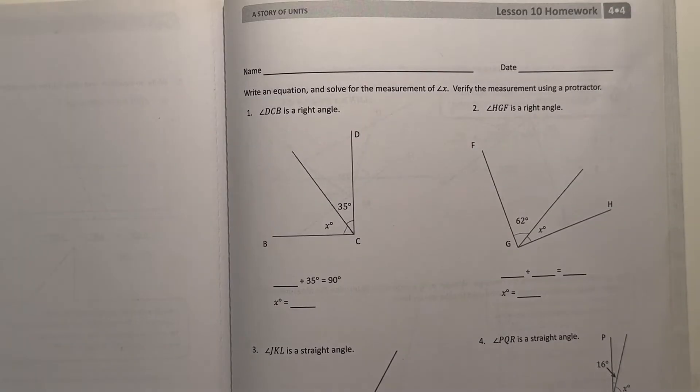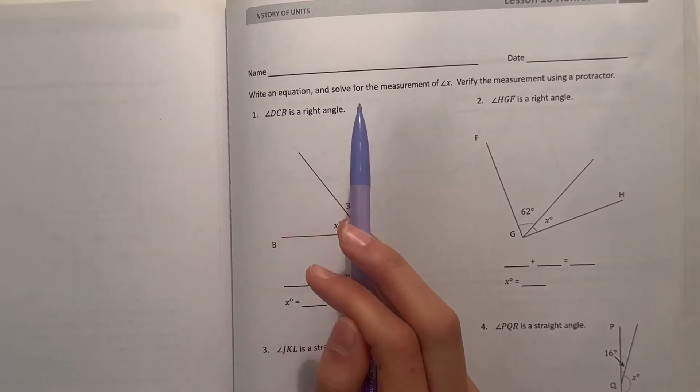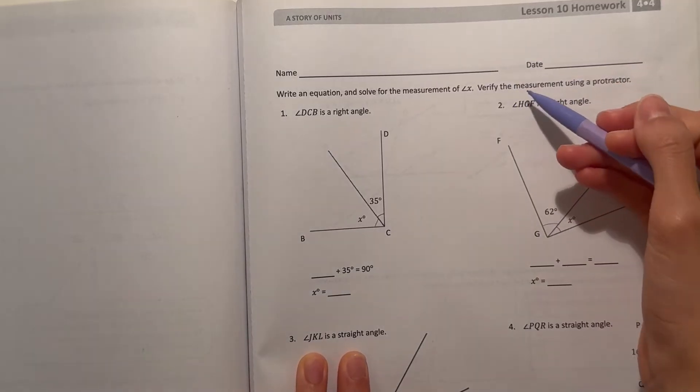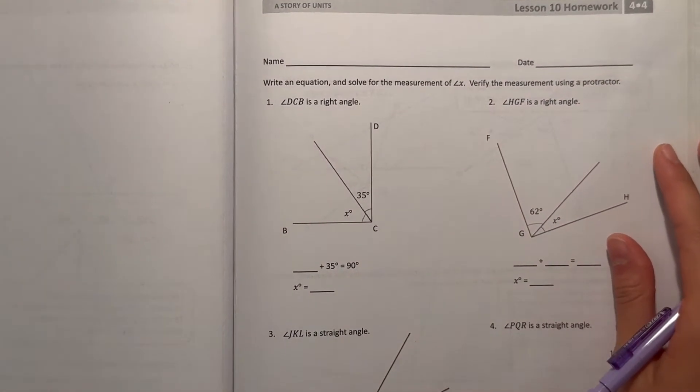Hey guys, are we here today I'm doing the Eureka Math Grade 4 Module 4 Lesson 10 homework. So let's get started. Write an equation and solve for the measurement of angle x. Verify the measurement using a protractor.